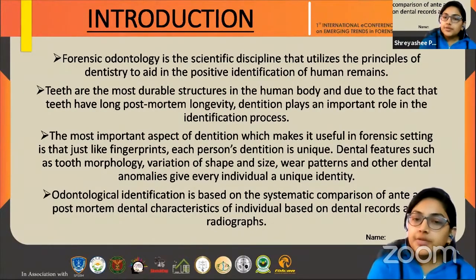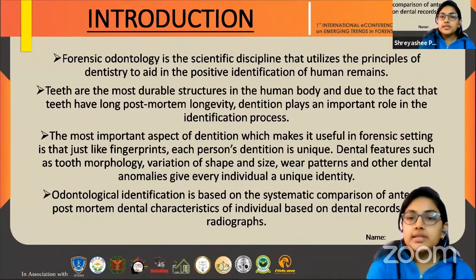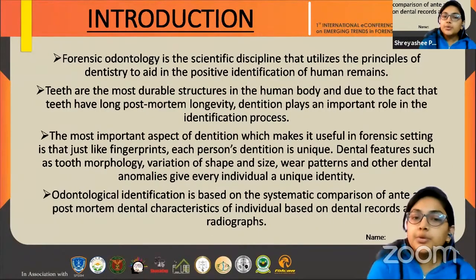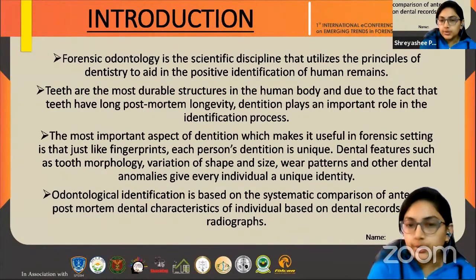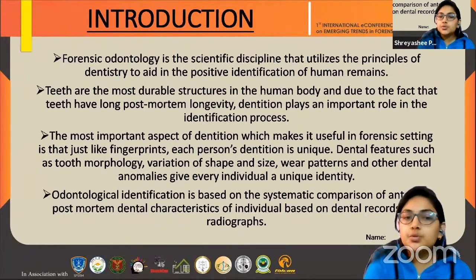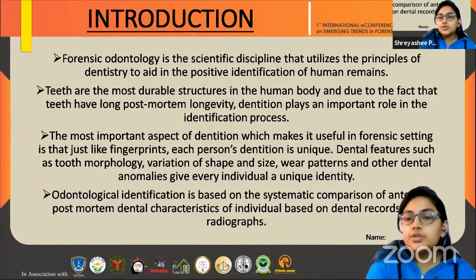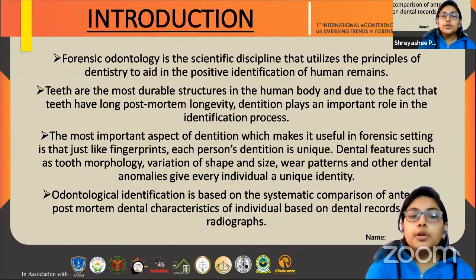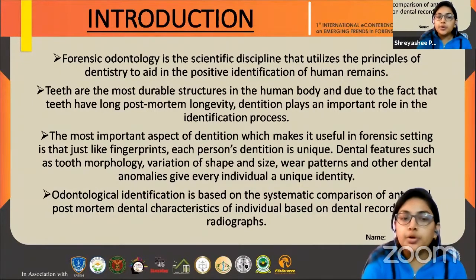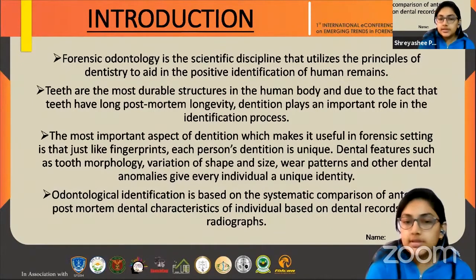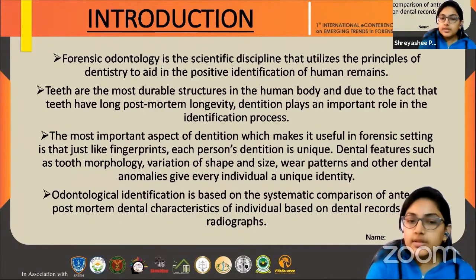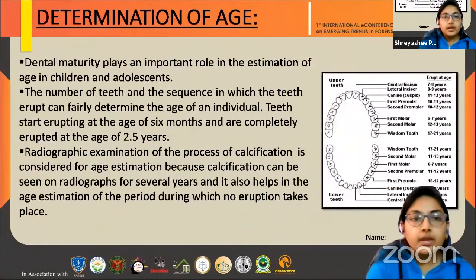The most important aspect of dentition which makes it useful in a forensic setting is that, just like fingerprints, every person's dentition is unique. Dental features such as tooth morphology, shape and size, and wear patterns give every individual a unique identity. The odontological identification is based on the systematic comparison of ante-mortem and post-mortem dental characteristics, based on dental records and radiographs.